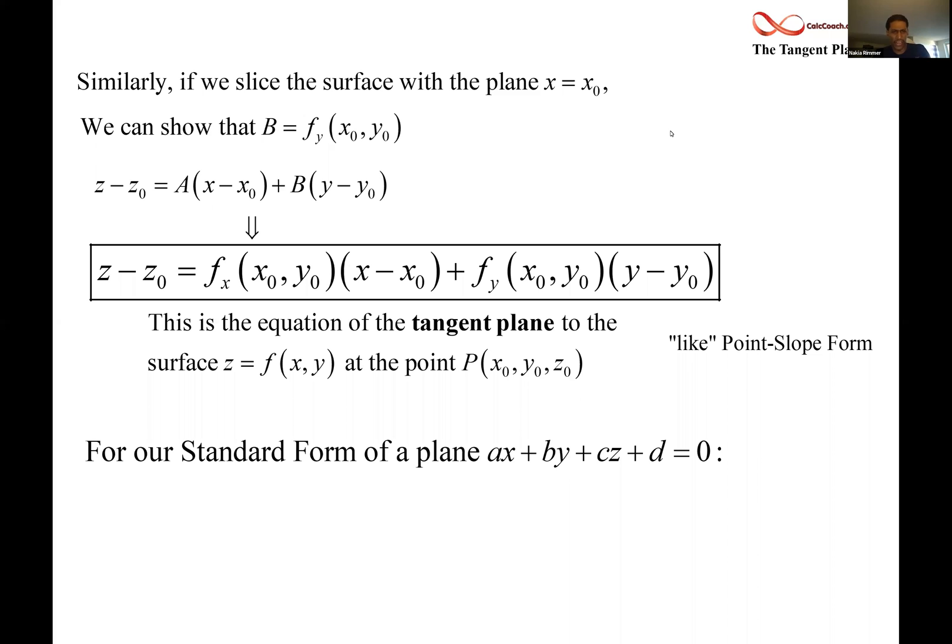So we move away from that point slope form. This is sort of like a slope intercept form. We know the values of a and b. If we're going to take within the box and transform it into this format, then it means we have to set it equal to zero. So we take the z minus z naught and we push it over to the other side by subtracting the quantity. So what would be the coefficient on z? It would be a negative one when you move it over.